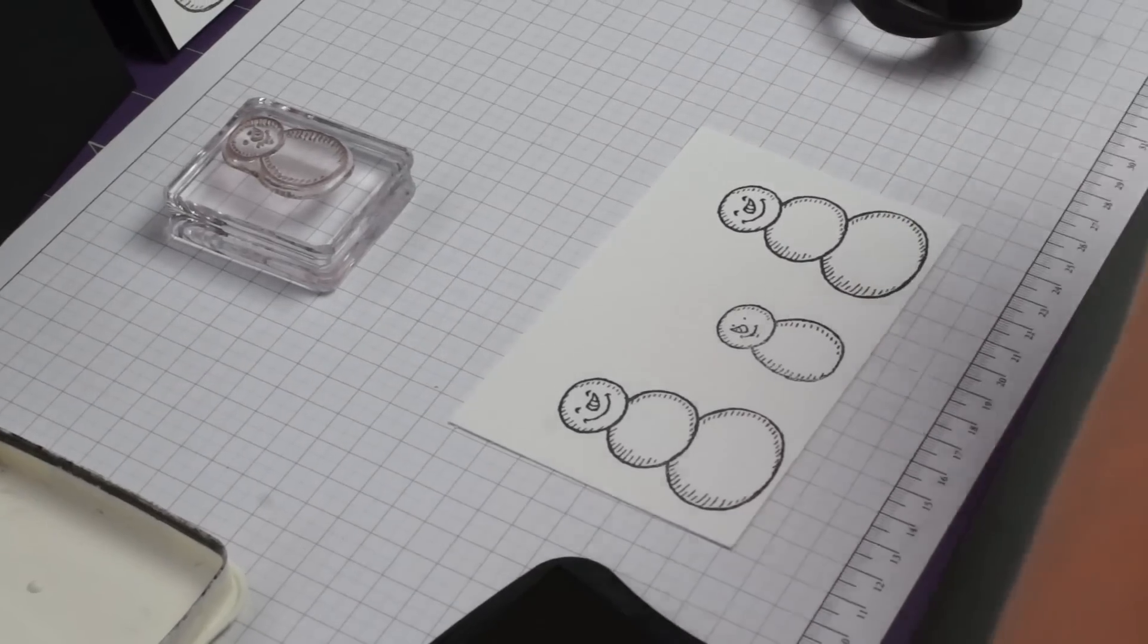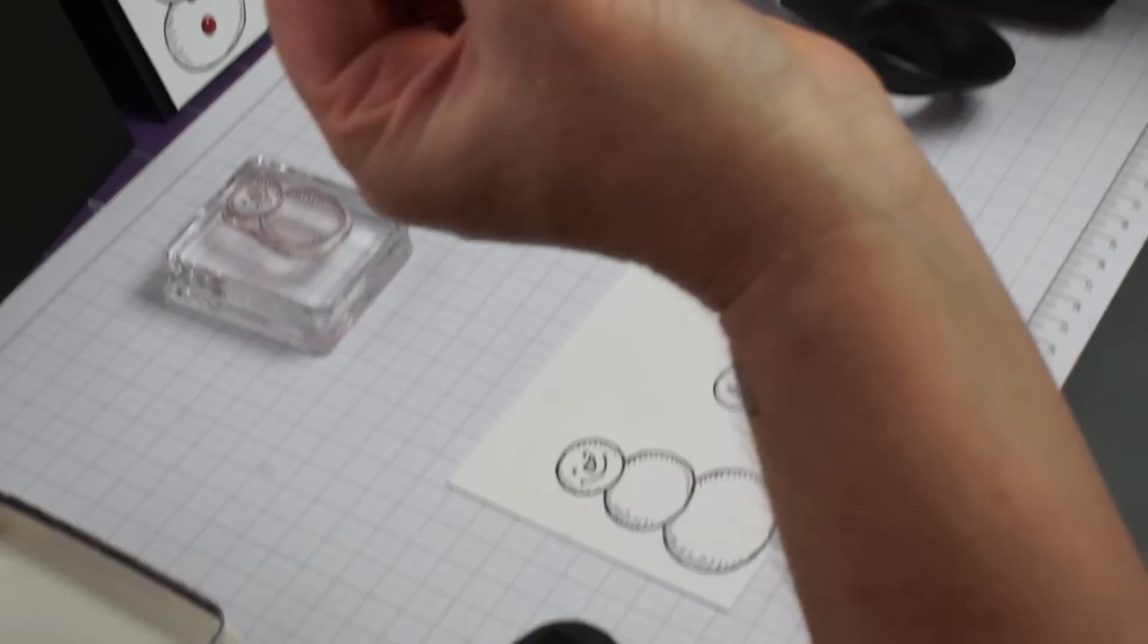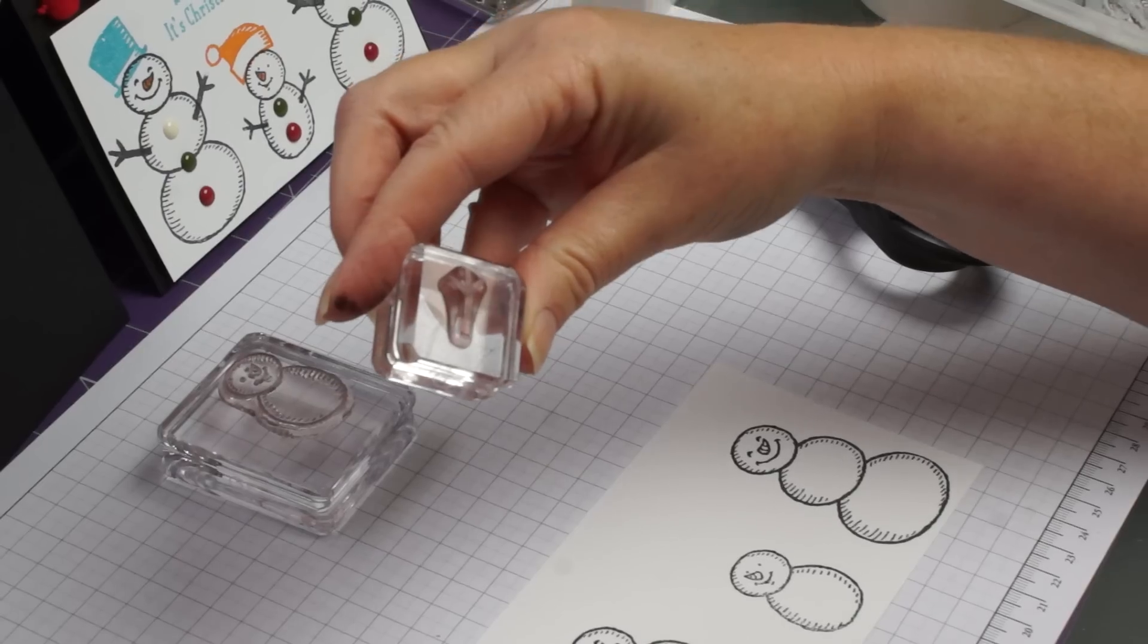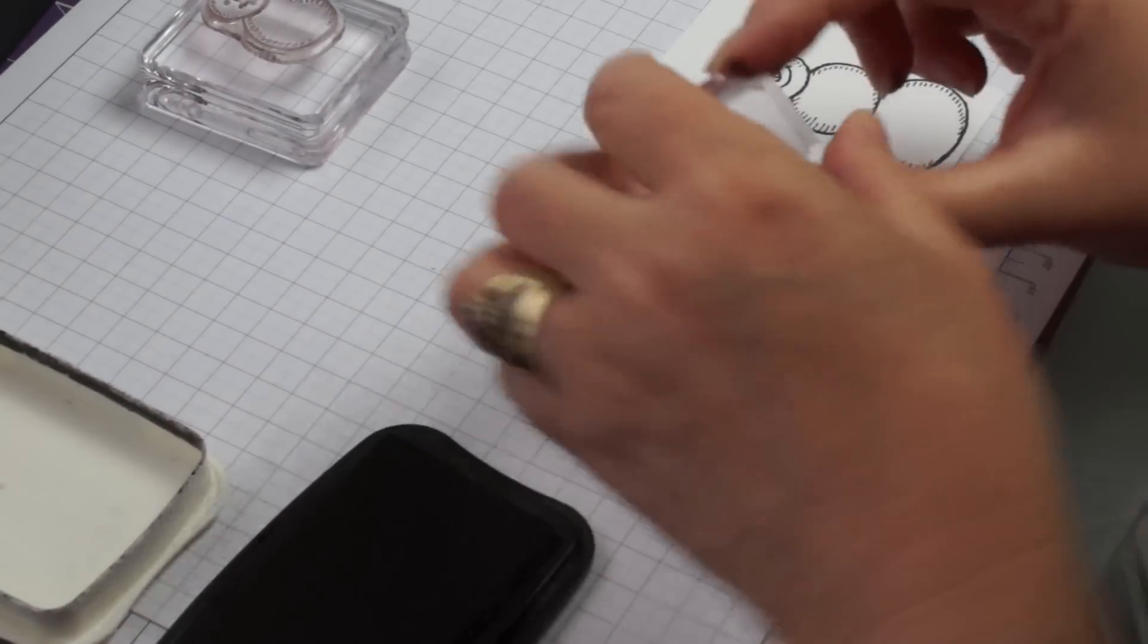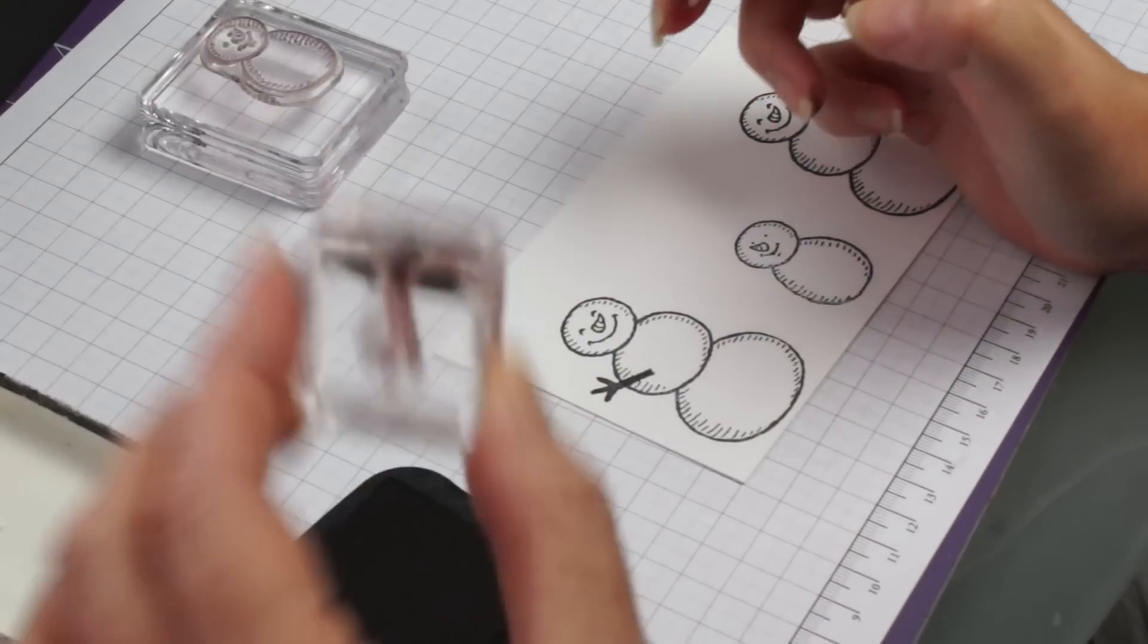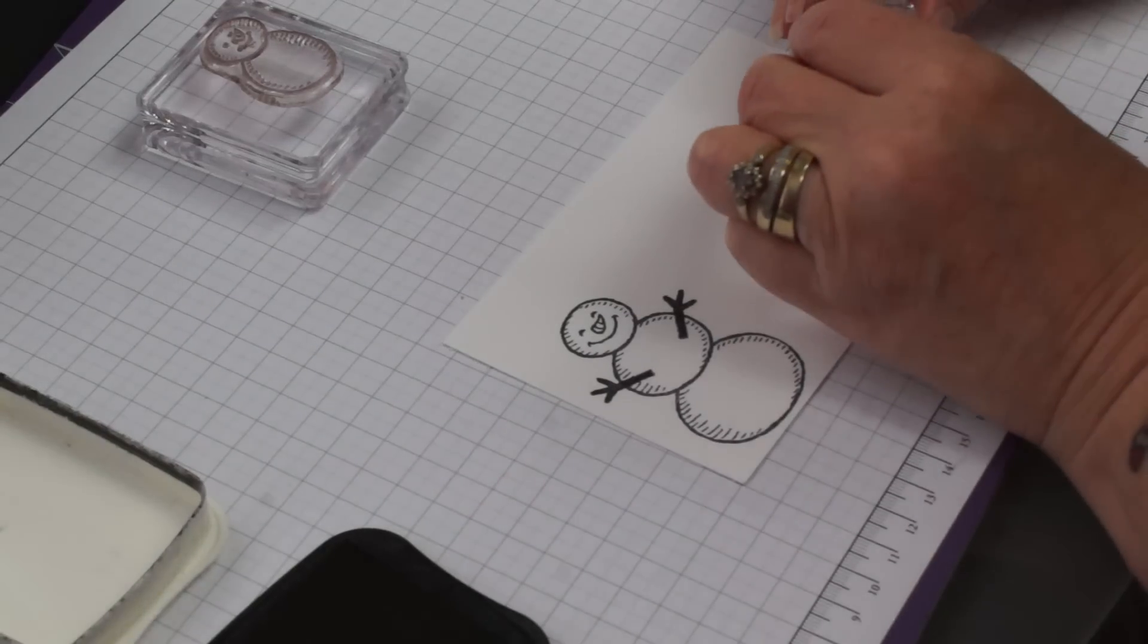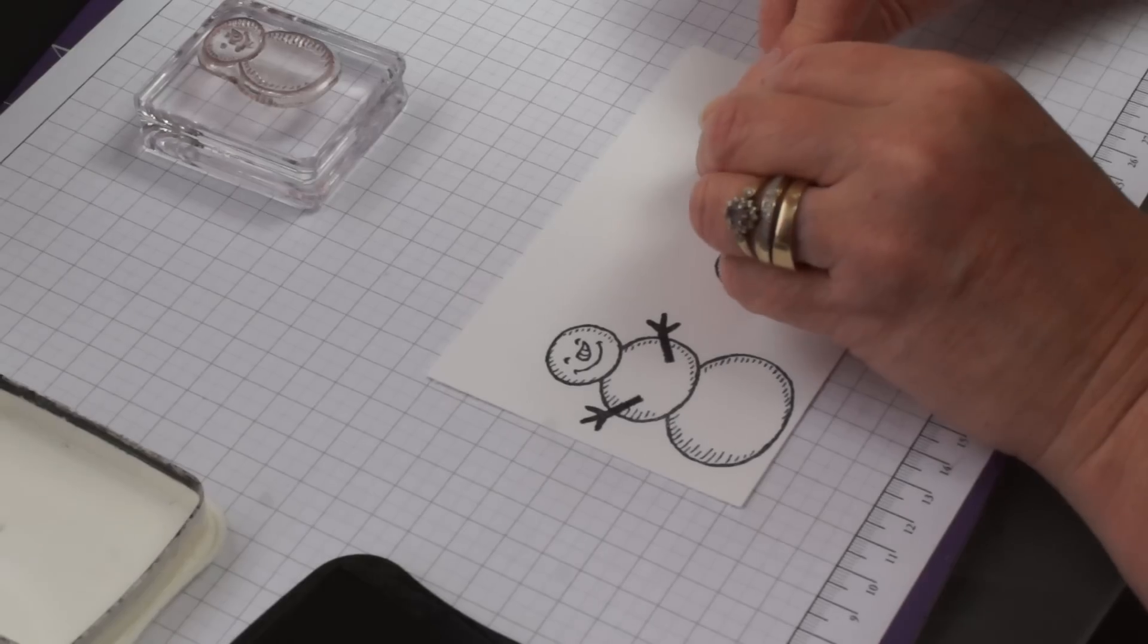The tricky bit is their little hands because they're so small, they're such tiny little pieces. But the good thing with polymer is that you can see exactly where you're going to pop them. So we'll stamp our little hand and we'll just watch where you're going and just pop that in. And again you can see through your stamp. Pop that down. And again for that one and for that one.